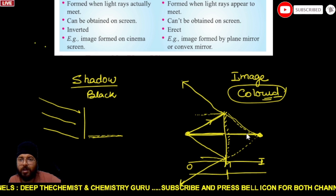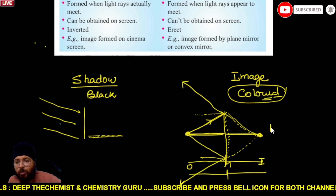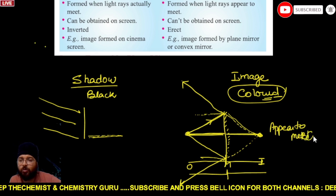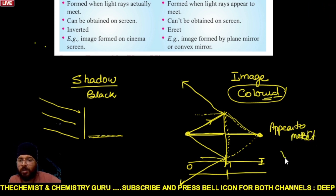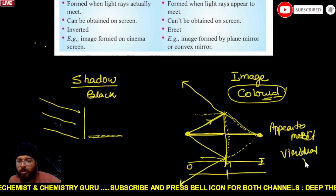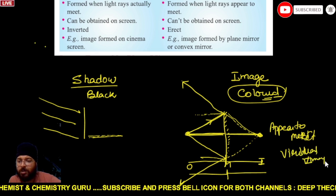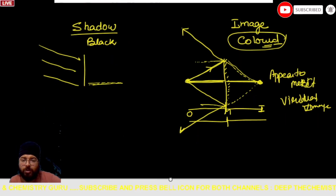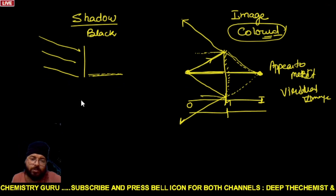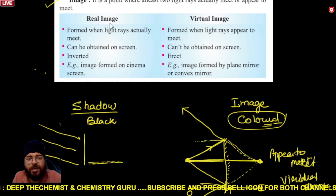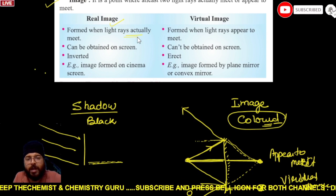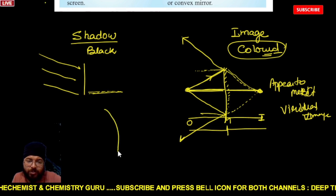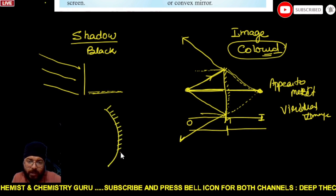In image formation, when the light rays appear to meet — they don't actually meet — such an image is called a virtual image. A virtual image cannot be formed on a screen. Some images where light actually meets are called real images. We will discuss this more in the next lecture.